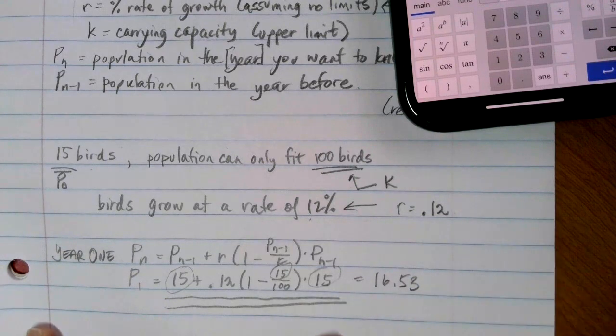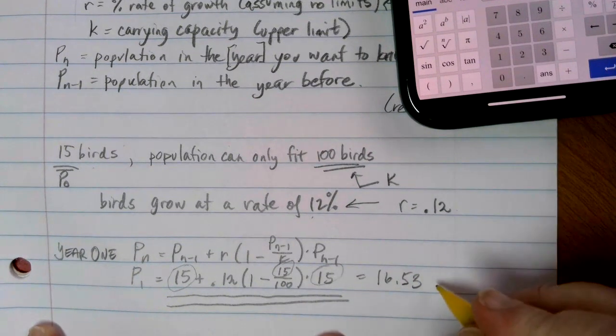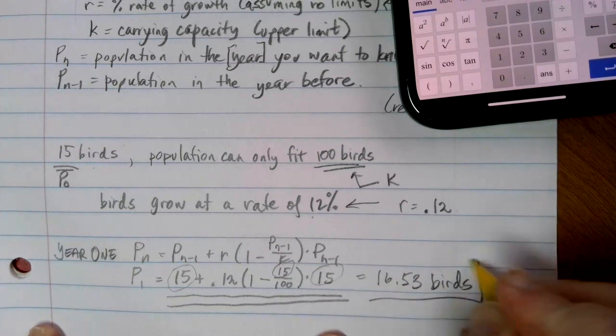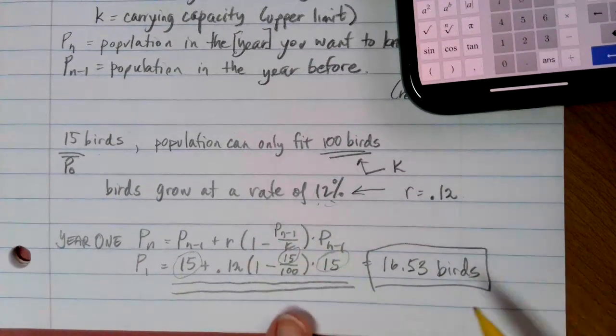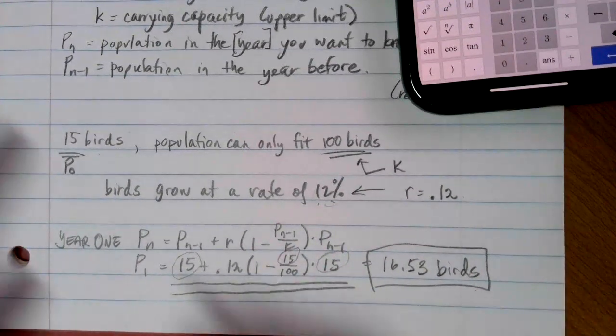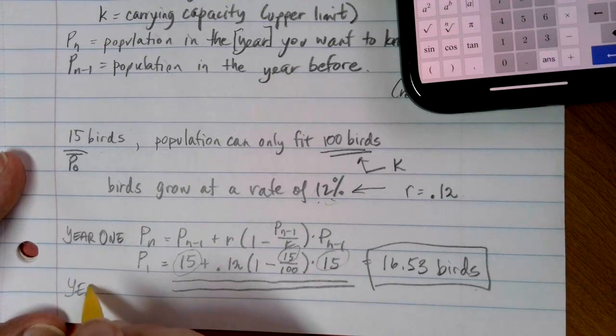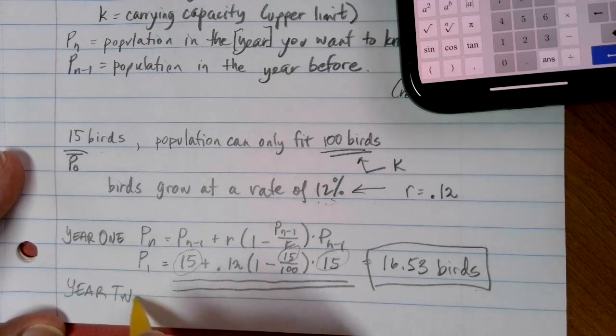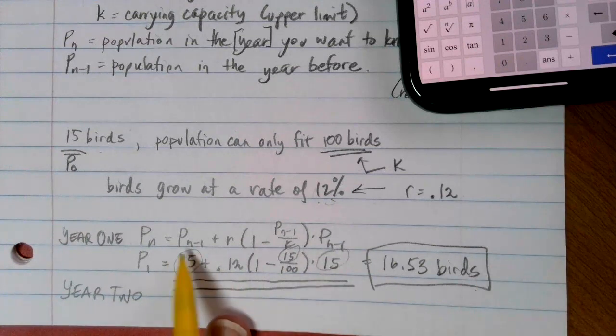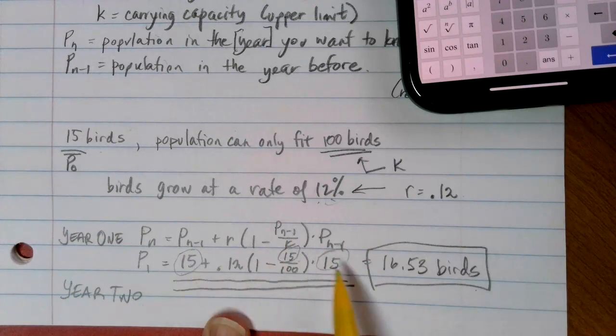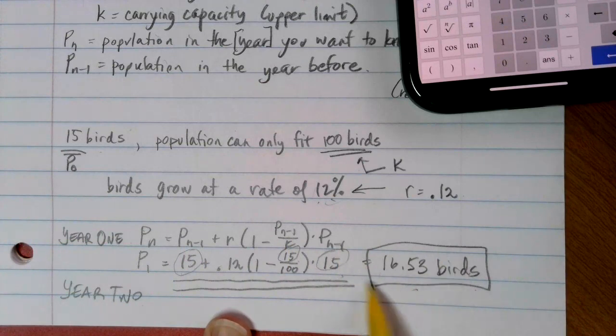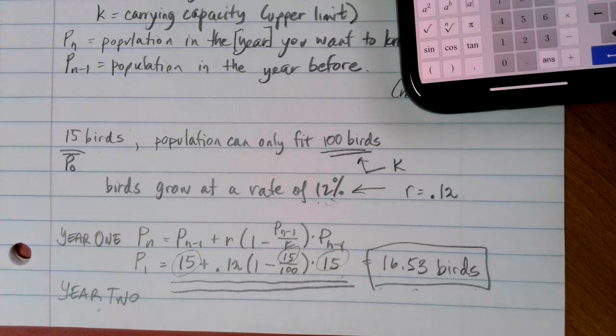So I'd have between 16 and 17 birds after my first year. We weren't growing a lot, just 12% a year, and we had a really small starting number there. Now, this is my value for year one. So if I wanted to do a calculation for year two, basically what we're going to be looking at here is every time that I see this P n minus one in the formula, or every time that this 15 appeared, I'm going to use the 16.53 number instead, because the 16.53 is the population the year before the one I'm looking for.